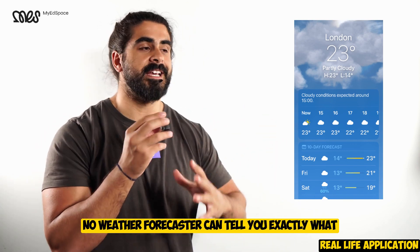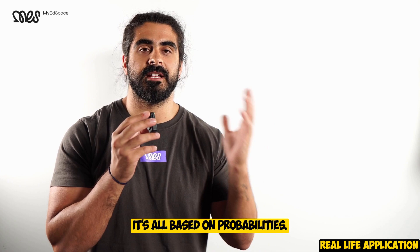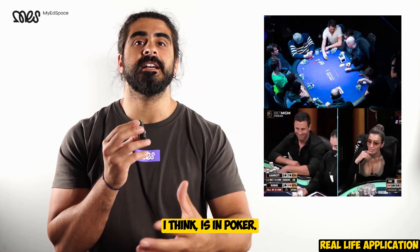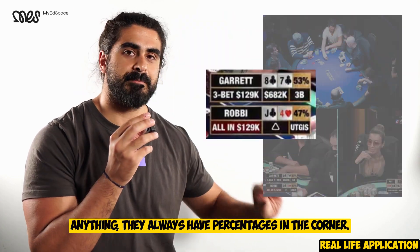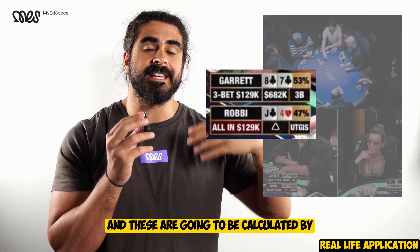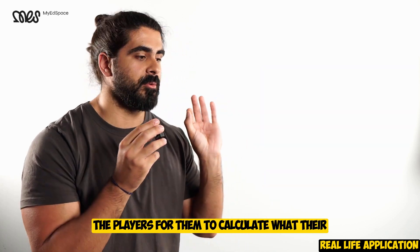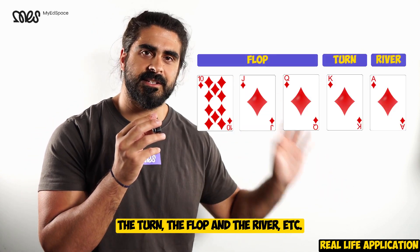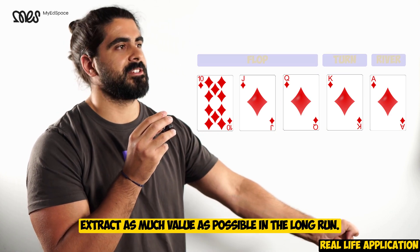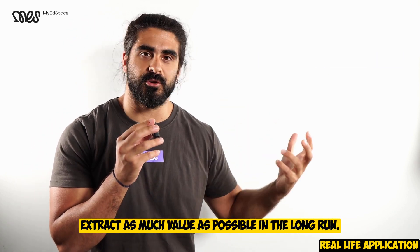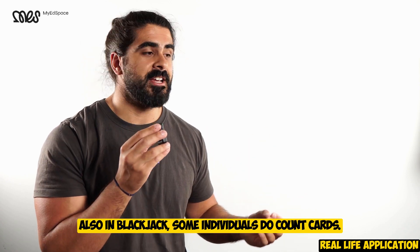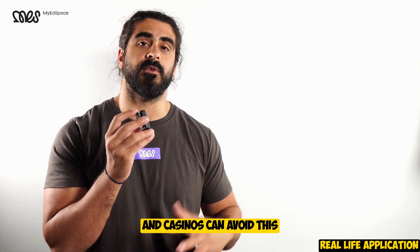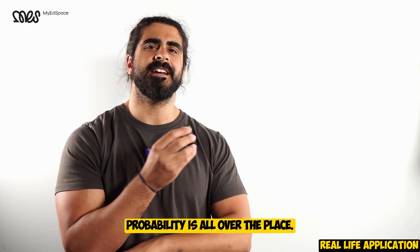Another place we can use probabilities is in weather forecasting. No weather forecaster can tell you exactly what the weather is going to be like tomorrow. It's all based on probabilities. Other places which are quite cool, I think, is in poker. If you've watched any poker on YouTube or anything, they always have percentages in the corner. And these are going to be calculated by the players for them to calculate what their expected value is for playing certain hands at the turn, the flop, and the river, etc. They want to know and they want to try and extract as much value as possible in the long run. Also, in blackjack, some individuals do count cards. Maybe you've seen the movie Rain Man. And casinos can avoid this by playing with multiple decks. Probability is all over the place.